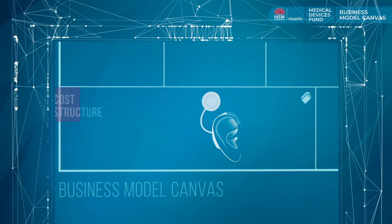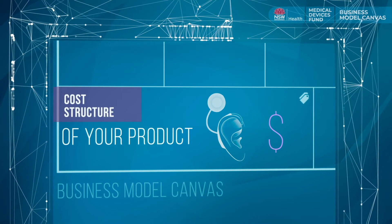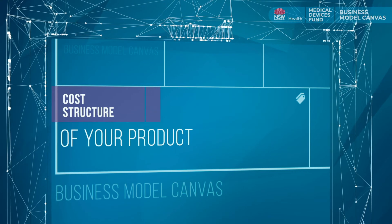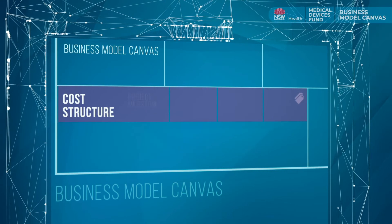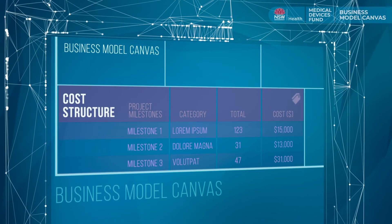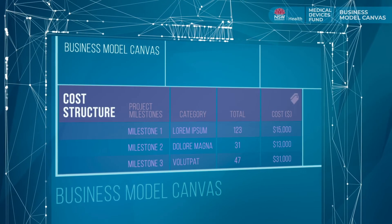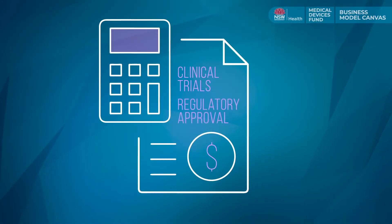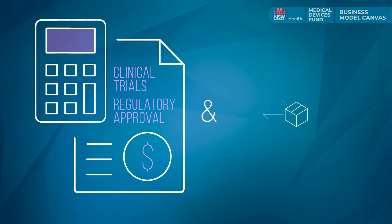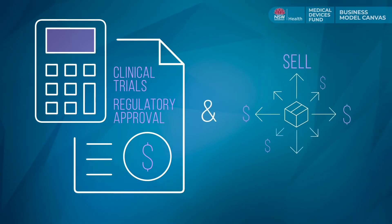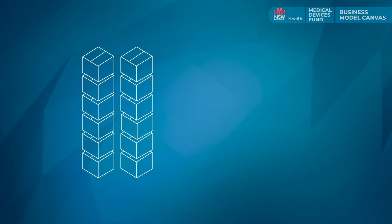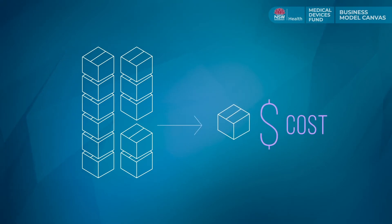The panel recommends that you understand the cost structure of your product, particularly the cost to achieve your key business activities and milestones, your clinical and regulatory go-to-market costs, and the cost to sell and distribute your product, and the unit cost of your product.